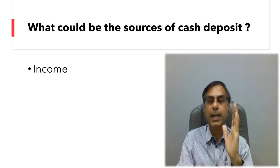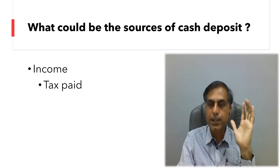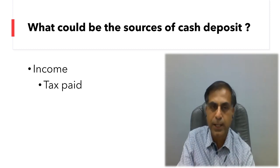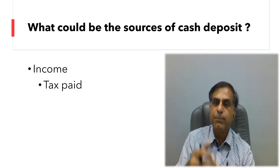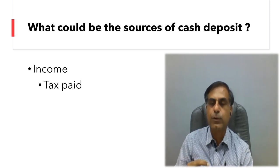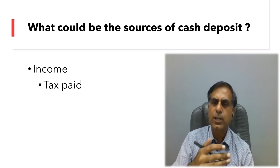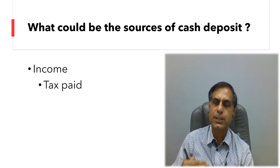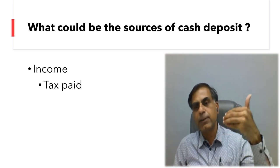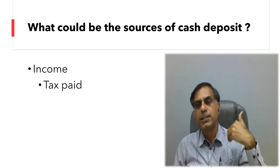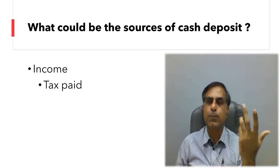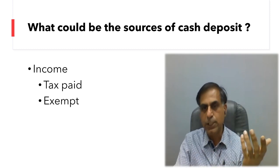Suppose you say whatever cash you have deposited is your income — either it will be tax-paid income. For example, a person earns 15 lakh rupees salary in a year. Every month he draws 50,000 rupees from his account. From April to February he has been withdrawing 50,000 regularly. In March, he found he is left with 1 lakh rupees which he deposited in his bank account. He can establish that for 11 months he withdrew 5 lakh 50,000, spent some on family maintenance, and was left with 1 lakh which he deposited. This kind of logic may be given.